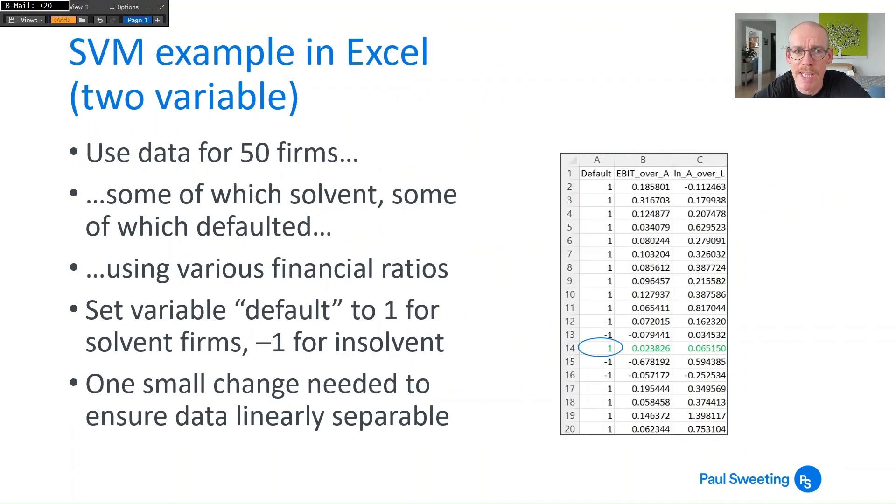So what I've got here is an example in Excel for a couple of variables for 50 firms, some of which are solvent and some of which have defaulted. I've got various financial ratios - I've just used EBIT over assets and the log of assets over liabilities for this two-dimensional version. I've set the variable default to 1 for solvent firms and minus 1 for insolvent firms. I just need to make one small change to this data to make sure it was linearly separable and then you can go about trying to work out what the parameters for the margin would be.